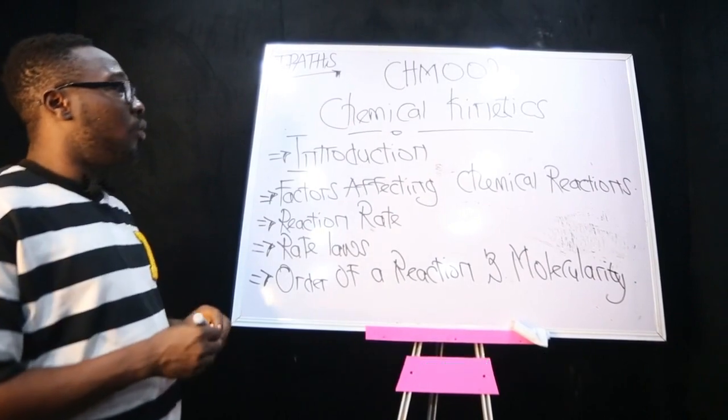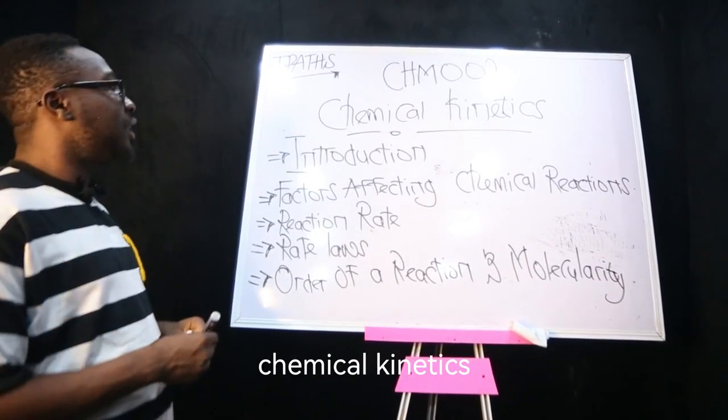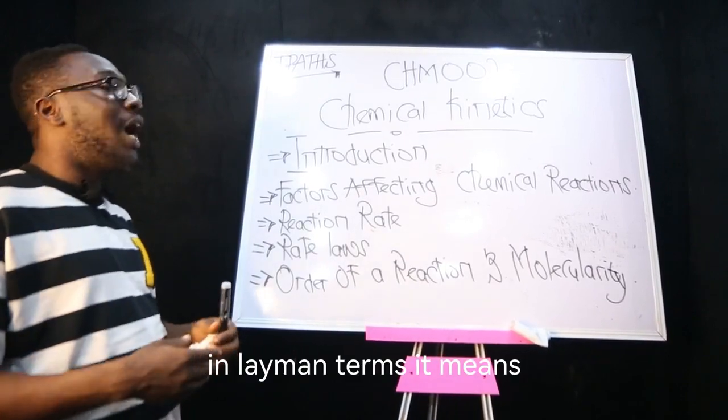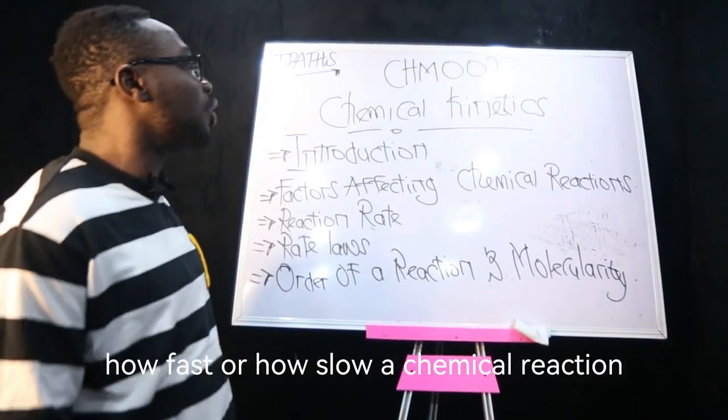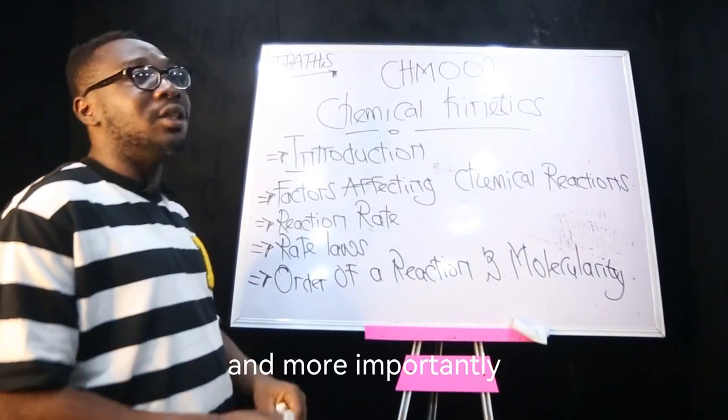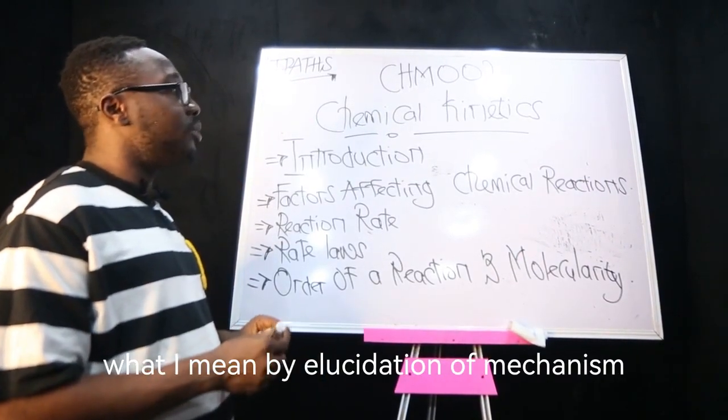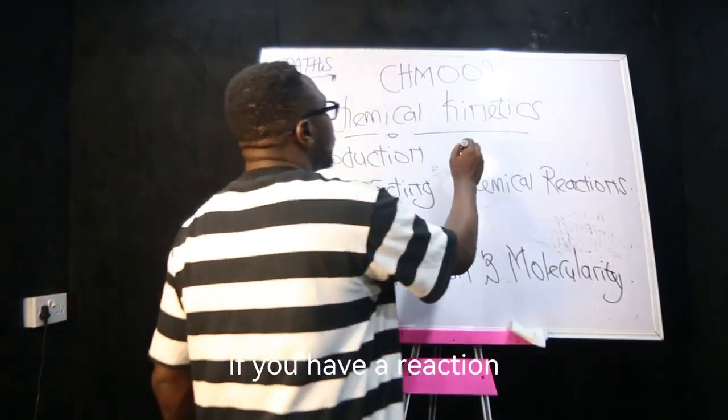I'm taking chemical kinetics. What is chemical kinetics? Chemical kinetics deals with the speed of chemical reactions. In layman's terms, it means how fast or how slow a chemical reaction is. More importantly, it deals with the elucidation of mechanisms.